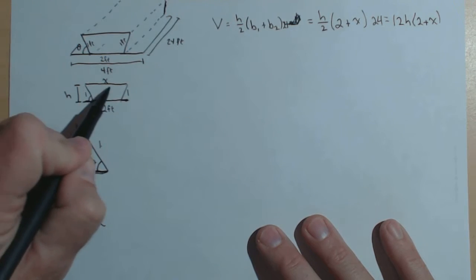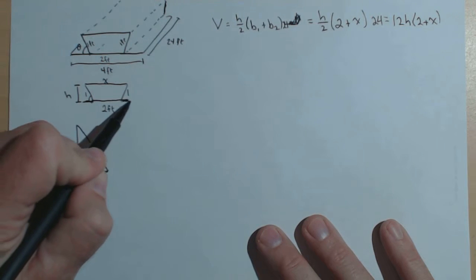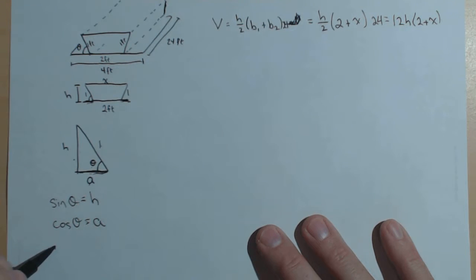So notice that x is the 2 feet plus an a on this side and an a on this side. So x equals 2 plus 2a, or 2 plus 2 cosine of theta, because a is equal to cosine of theta.